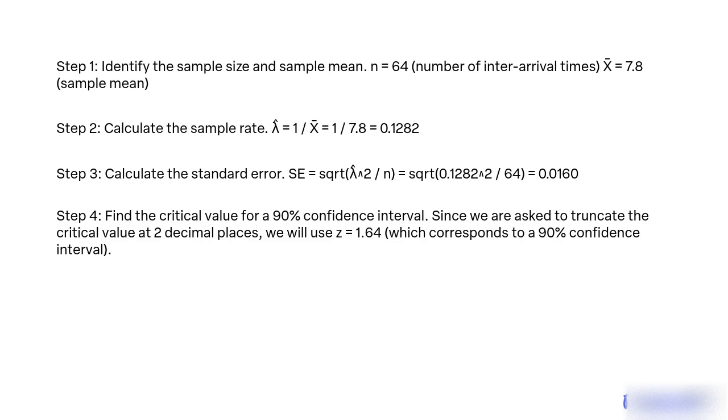Step 4: Find the critical value for a 90% confidence interval. Since we are asked to truncate the critical value at two decimal places, we will use z = 1.64, which corresponds to a 90% confidence interval.